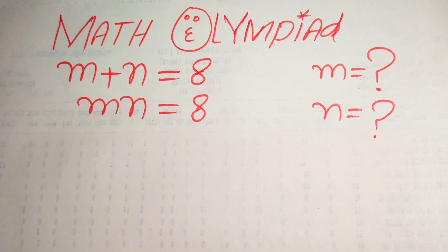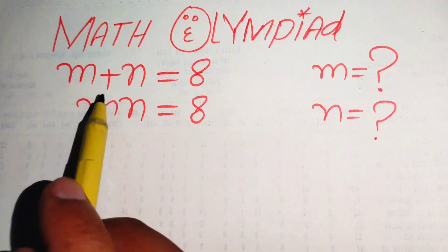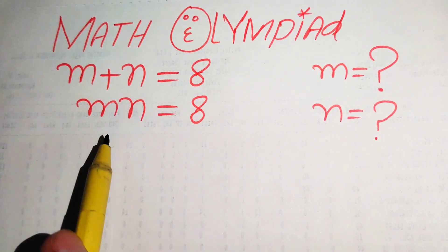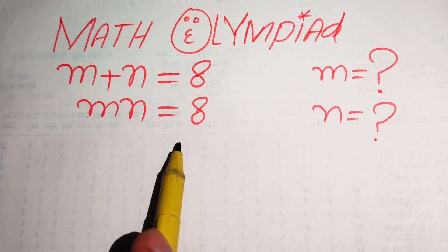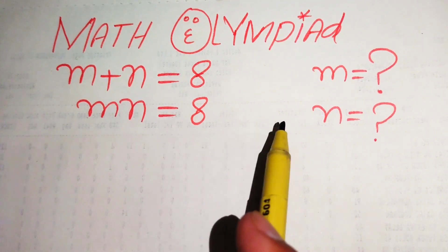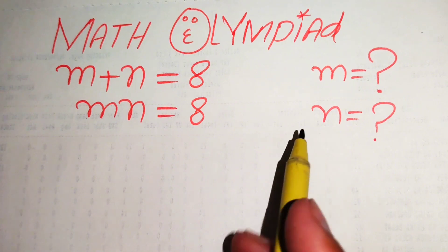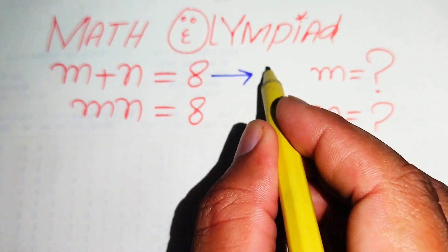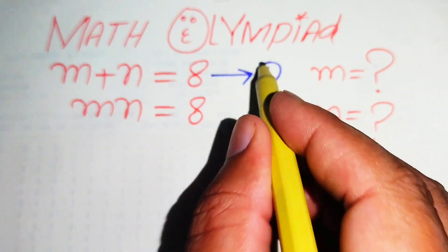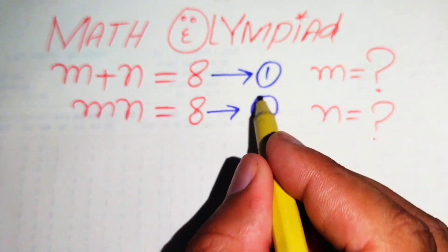Hello everyone, welcome. We will solve this algebra problem where m plus n equals 8, and m multiplied by n equals 8. We solve this problem for the values of m and n. We call the first equation number one and the second equation number two.